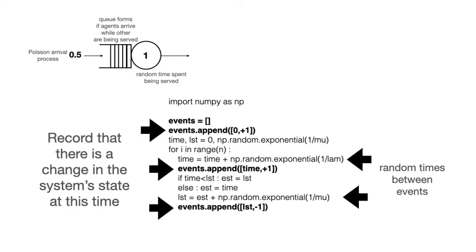Notice that such simulations can be used to model things other than queues. In fact we have already discussed elsewhere in this course how we can model the number of cars that pass on a road by simulating a Poisson process. This is another example of a discrete event simulation. It is also important to note that in our description of the discrete event simulation there is no requirement that the times between events be exponential random variables. If the times between events are exponential random variables then the random variable that tells us the state of the system is Markovian.